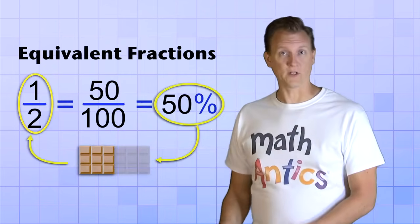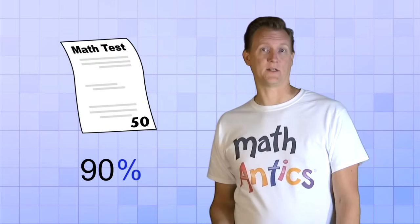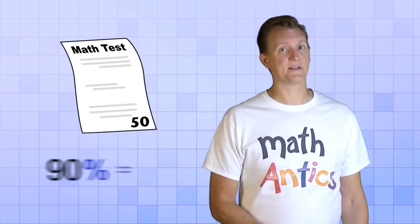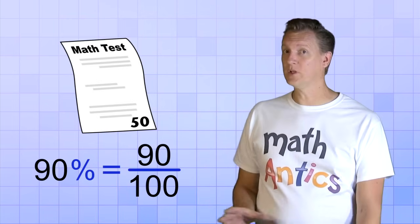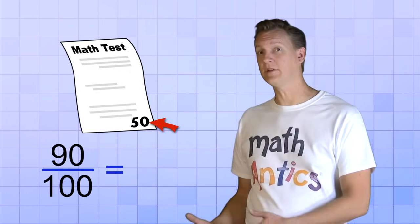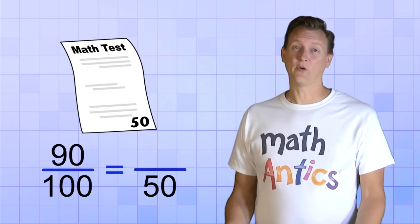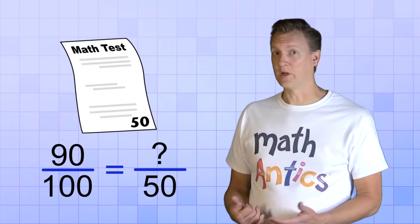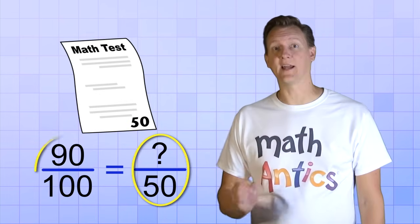To see this even more clearly, let's think about the test I mentioned where you got a score of 90%. 90% is the same as the fraction 90 over 100. But since the test really only had 50 questions, the actual score must be an equivalent fraction with 50 as the bottom number. And even though we don't know what the top number would be, we can figure it out because we know that our actual score is equivalent to 90 over 100.